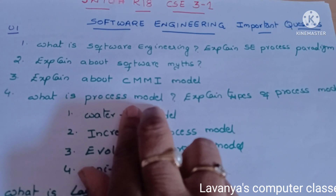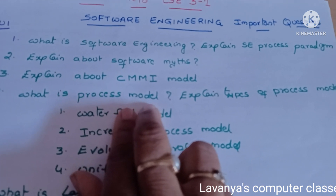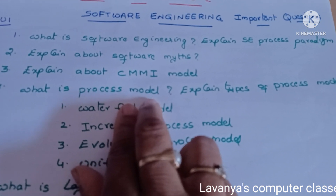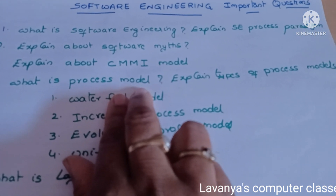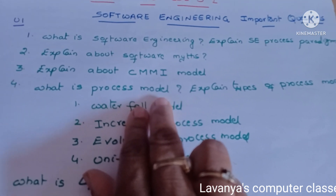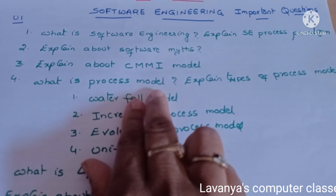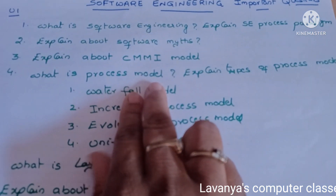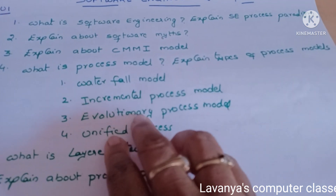The second question is explain about software myths — just write the software myths, it's a short answer question. The third and very very important question is explain about the CMMI model — this is an essay type question.